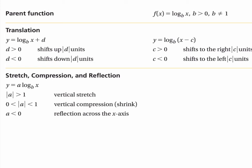a vertical translation will be of the form y equals log base b of x plus d. When d is positive, it shifts up d units, and if d is negative, it shifts down d units.